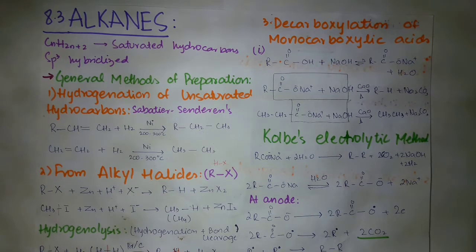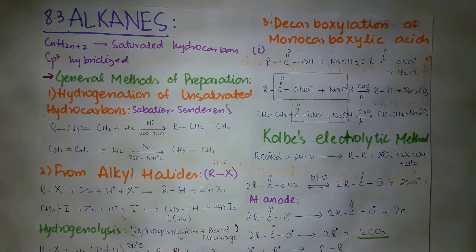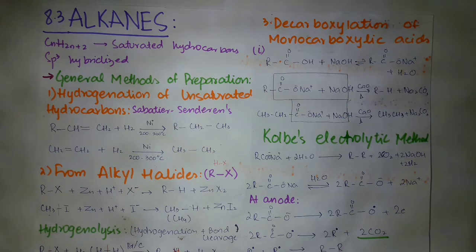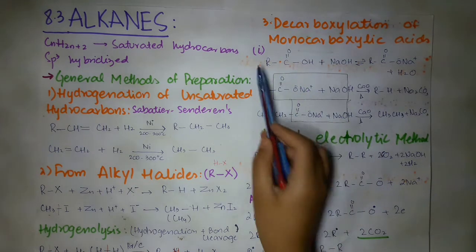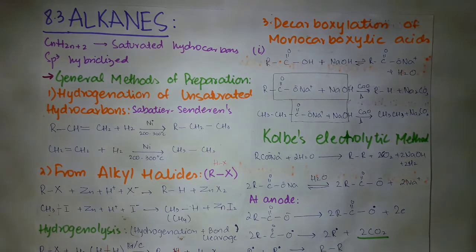The third method is decarboxylation of monocarboxylic acids. Decarboxylation means removal of carbon dioxide. Monocarboxylic acids are those acids in which there is one carboxylic group. Decarboxylation is the process in which we remove carbon dioxide from such acids.